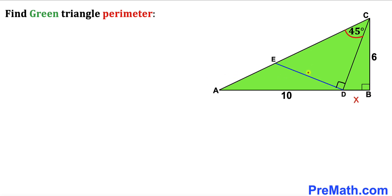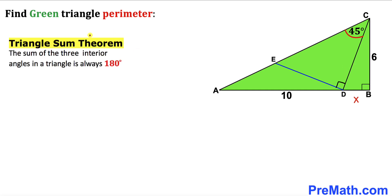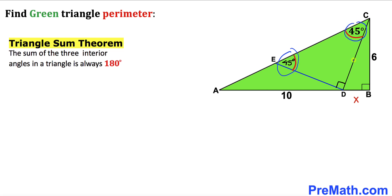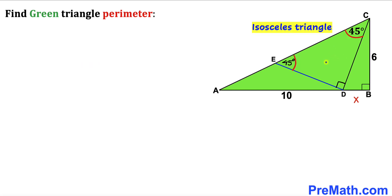I have drawn this perpendicular DE on line CD, so this angle is 90 degrees. Recalling the triangle sum theorem — the sum of three interior angles in a triangle is always 180 degrees — angle CED is going to be 45 degrees. Since angles 45, 45, and 90 degrees sum to 180 degrees, triangle CDE is an isosceles triangle, so side length CD equals side length DE.